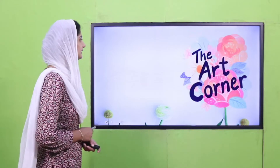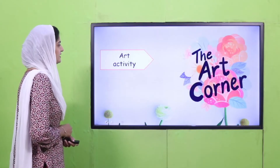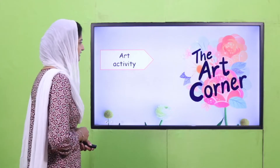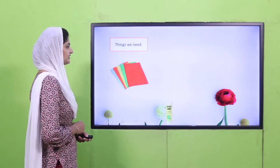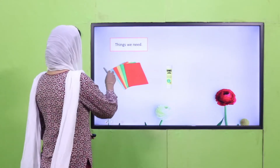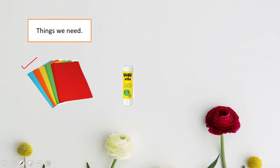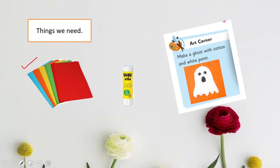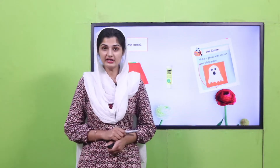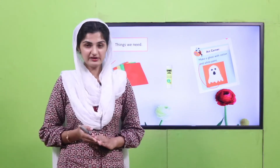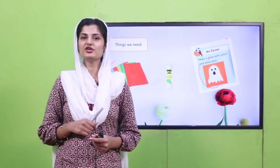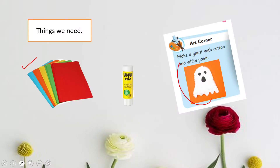Let's take a look at the next slide. Now we have the art corner activity. For this activity, we need glue and some sheets. And what are we going to make playgroup? We are going to make a cute craft of a ghost! Your teacher has placed the materials in the art corner. Go there quickly, make the craft with the help of your teacher, bring back your craft, and we are going to share with each other.